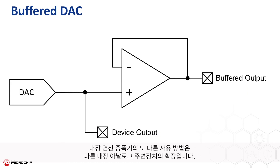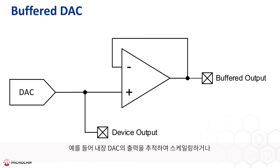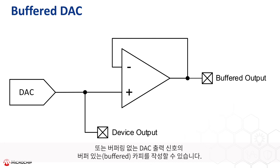Another use case of the integrated op-amp is as an enhancement to an existing analog peripheral onboard. For instance, the output of an onboard DAC could be tracked and scaled by the op-amp, or used to create a buffered copy of the signal from an unbuffered DAC.